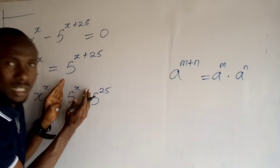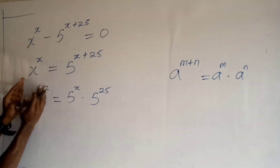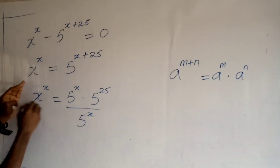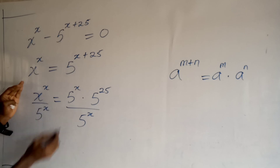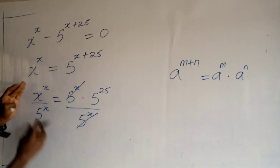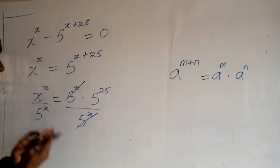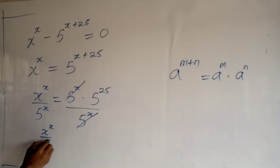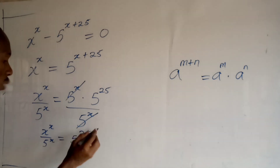At this point I want to divide both sides by 5 to the power x, to take all the powers of x to the left-hand side. When I divide here by 5 to the power x, I also divide the right side by 5 to the power x. Those terms cancel, and I have x to the power x over 5 to the power x is equal to 5 to the power 2, which is 25.